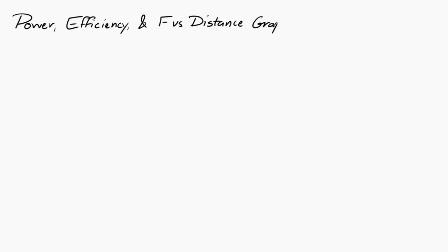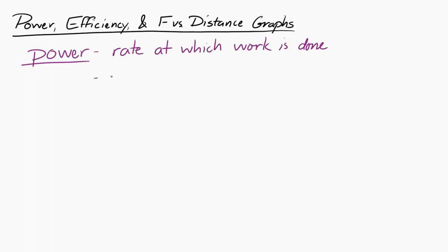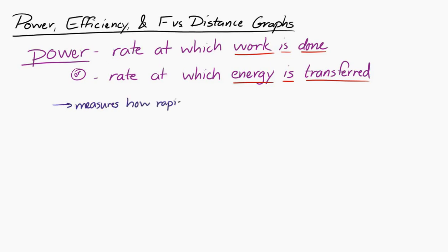Let's take a look at power, efficiency, and force versus distance graphs. Power is defined as the rate at which work is done. Because work is a transfer of energy, we can also say that power is the rate at which energy is transferred.